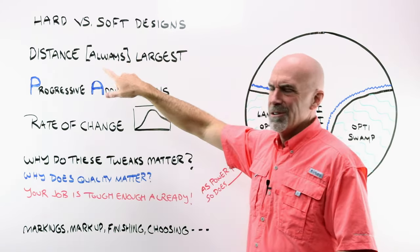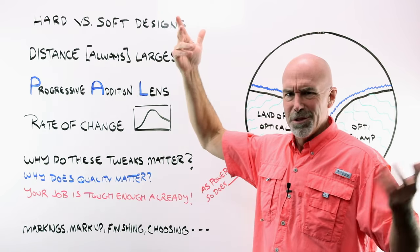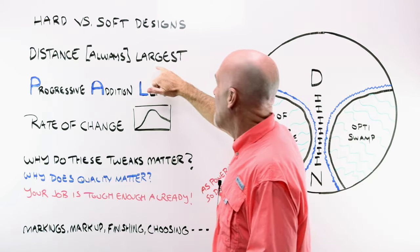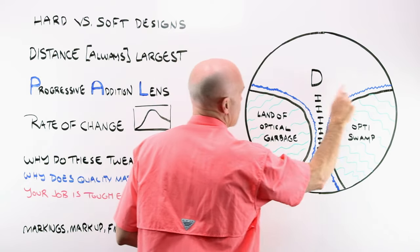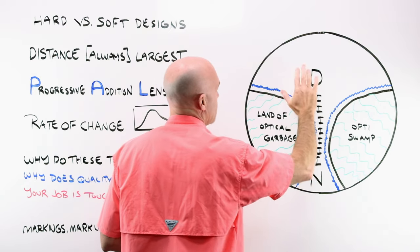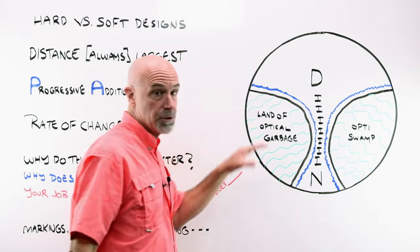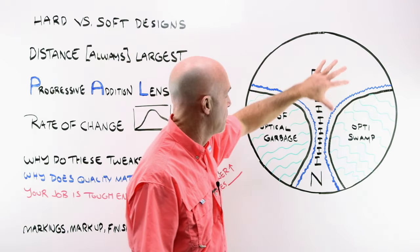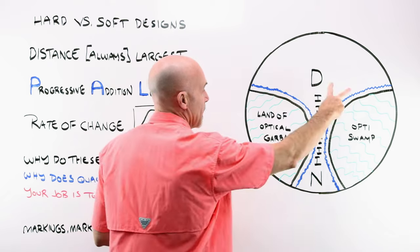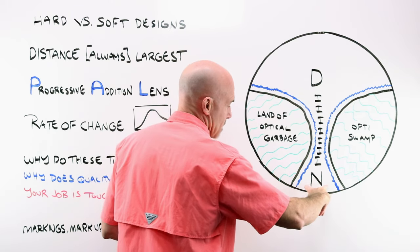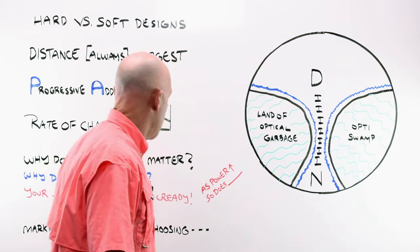Inherent in progressive design is that the distance is, and I put always in brackets because who knows, somebody maybe turned to freeform upside down once or something, is always the largest area just represented here. This is a big, large viewing area. You have some good peripheral vision. You can look up around. This is fairly all clear. It's a good size area. Intermediate always narrows. Slight widening down towards your near.